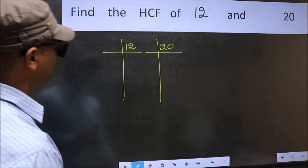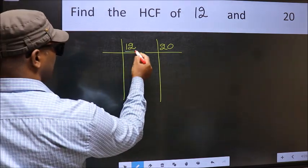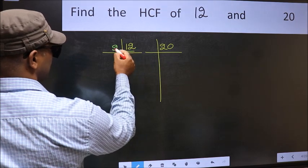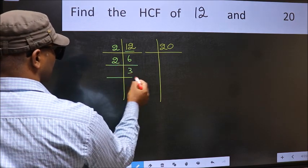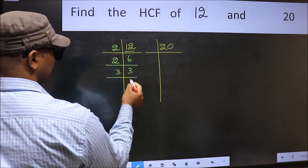Next. Now, here we have 12. 12: 2, 6, 12. 6: 2, 3, 6. 3 is a prime number, so 3, 1, 3.